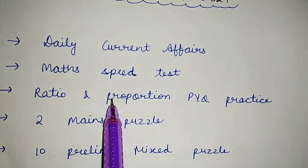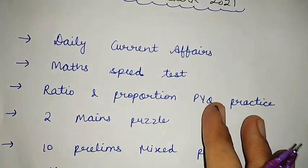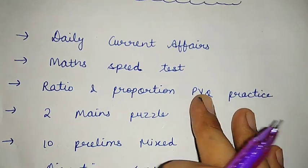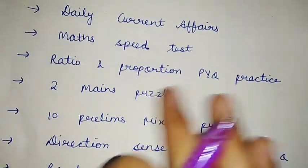Then there is ratio and proportion previous year questions practice, and for this you can go for Ace Quant PDF which is available in telegram. Then there are two mains level puzzles.